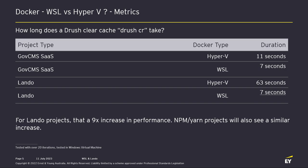Looking at the metrics on screen, GovCMS SaaS is pretty similar — not too bad just for clearing the cache on a SaaS site. But you really notice the difference when you're using Lando with your whole project and Composer files — it's much, much faster, nine times faster on my computer, inside a Windows virtual machine. Because of antivirus issues it's not native. Also, because it's great with lots of files, your NPM and Yarn will also see a decent speed increase if you run those inside your container.